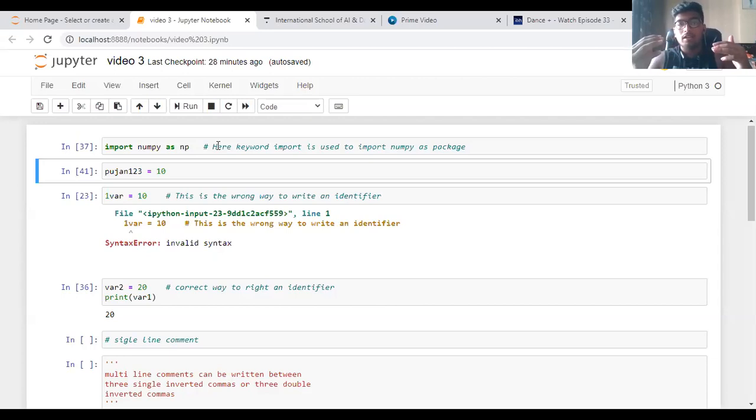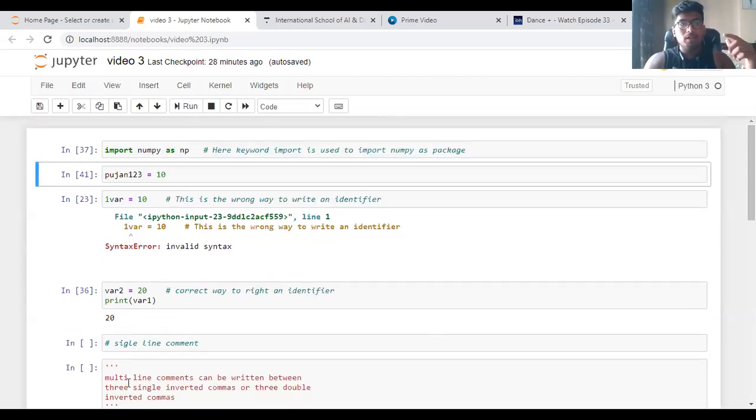But sometimes comments cannot come in single lines, they come in multi-lines. Multi-line comments are written between three single inverted commas or three double inverted commas. You can write comments anywhere, but always make a habit that you have to write comments when you are coding. It helps you understand how your code is going to work.